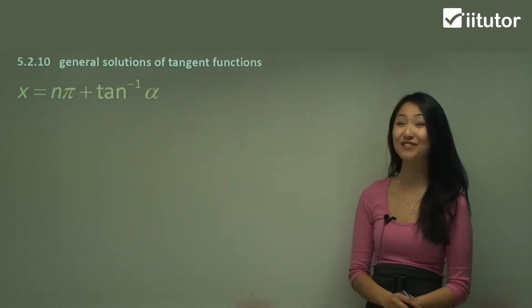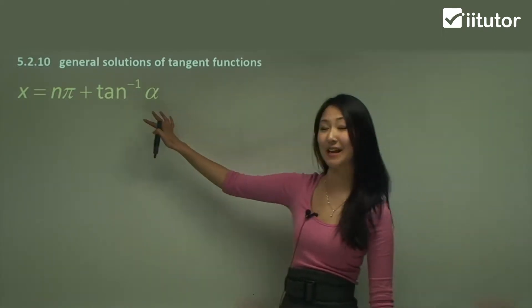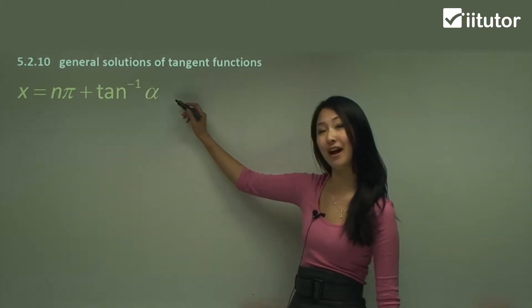So finally, we have our general solution for our tangent function. This is just x equals n times pi plus the inverse tan of alpha.